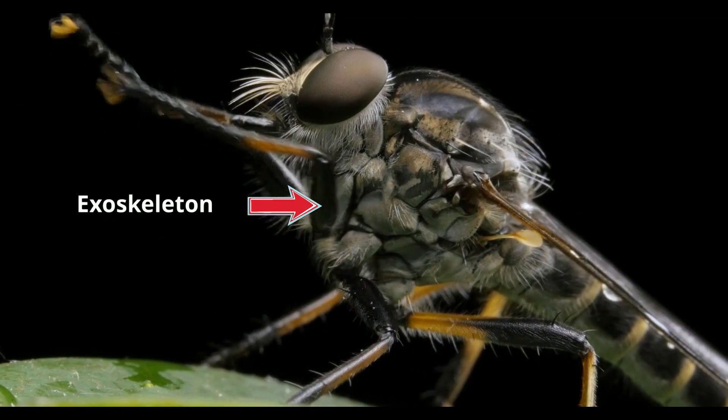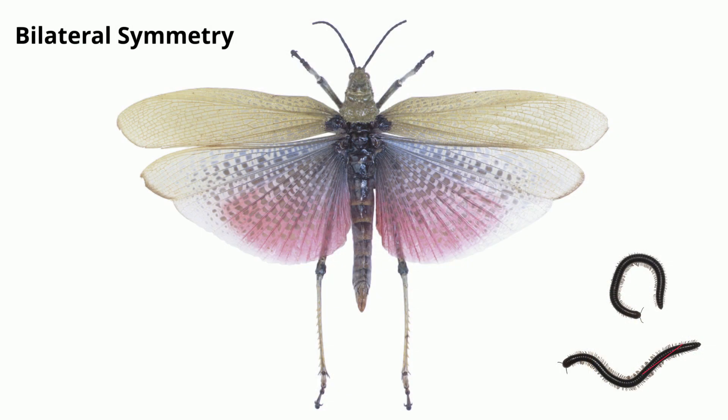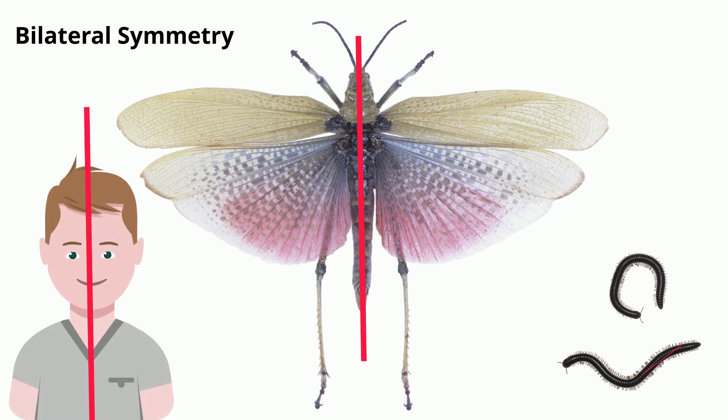Bilateral symmetry. All Arthropods have bilateral symmetry. This means that if you draw a line straight down the middle of their bodies, both sides will be identical to one another. Humans also have bilateral symmetry.